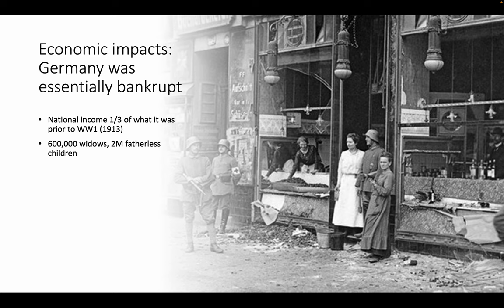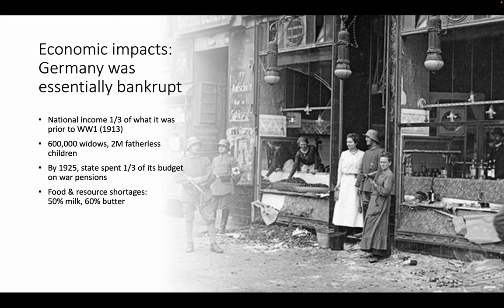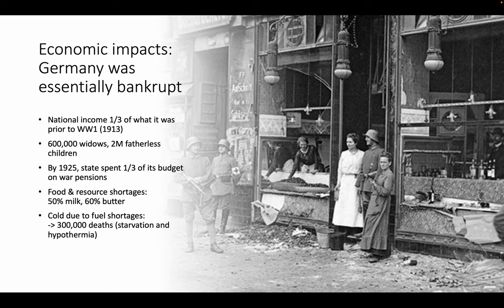There were 600,000 widows and 2 million fatherless children. By 1925, the state was spending a third of its budget on war pensions — paying money to the families of soldiers. There were also shortages of essentials: 50% of milk and 60% of butter production had stopped compared to before the war. There were fuel shortages too, making it very cold. 300,000 died due to starvation and hypothermia. Industrial production was two-thirds of what it had been prior to World War I.